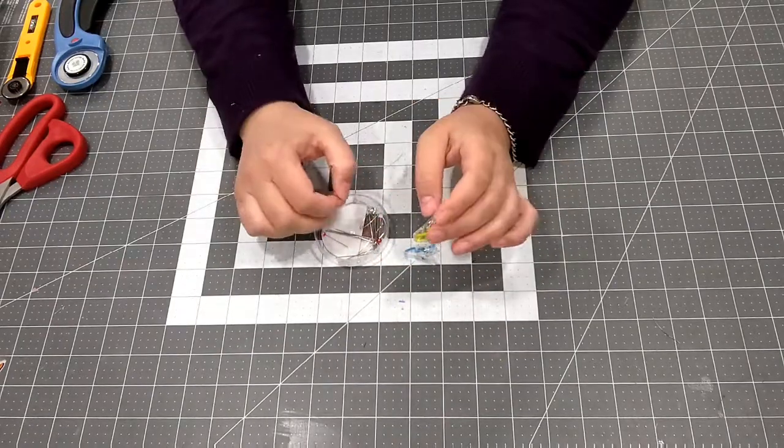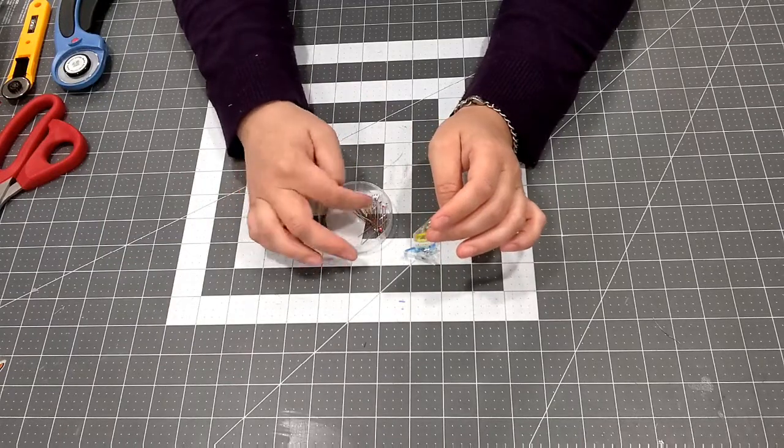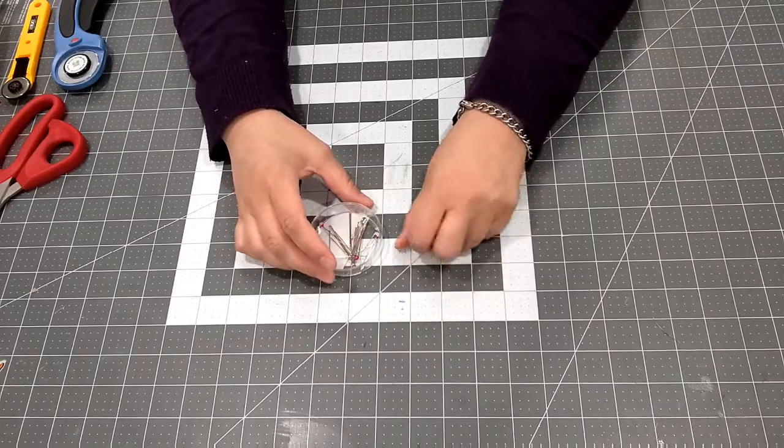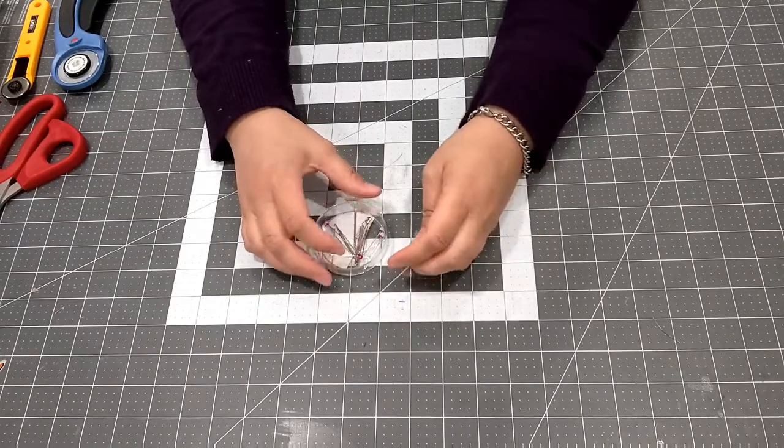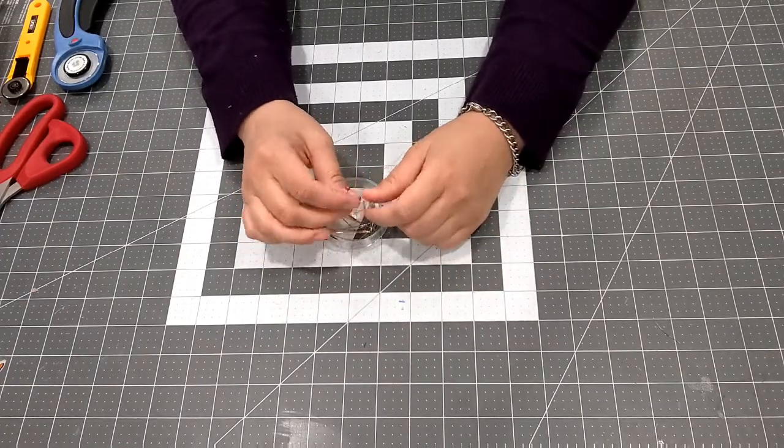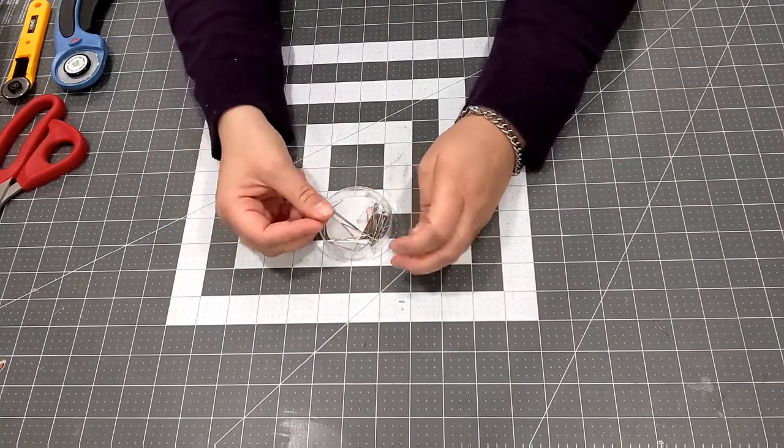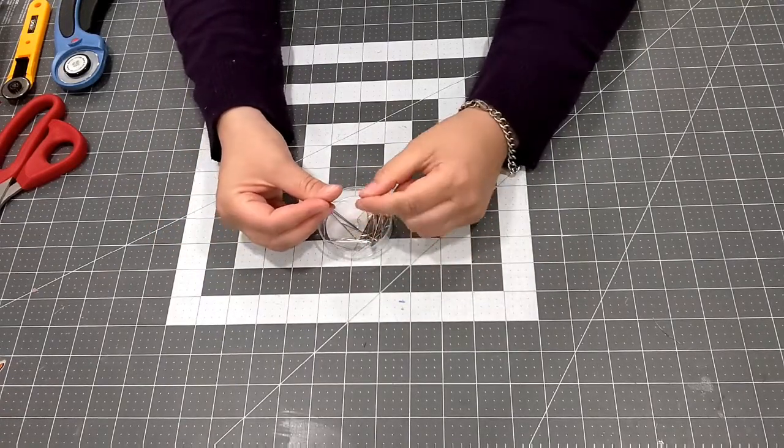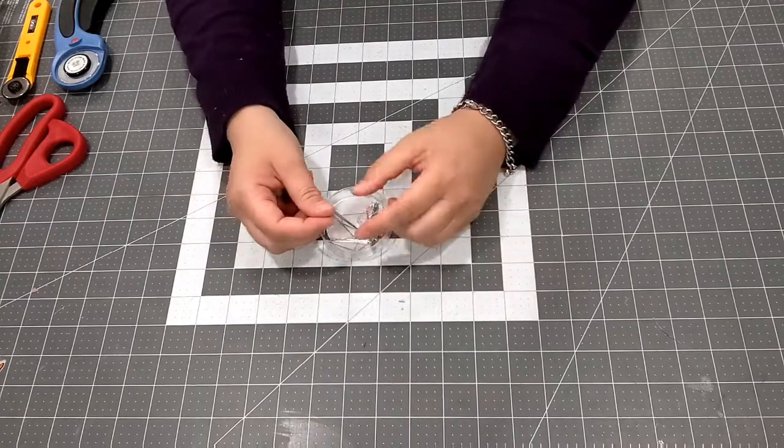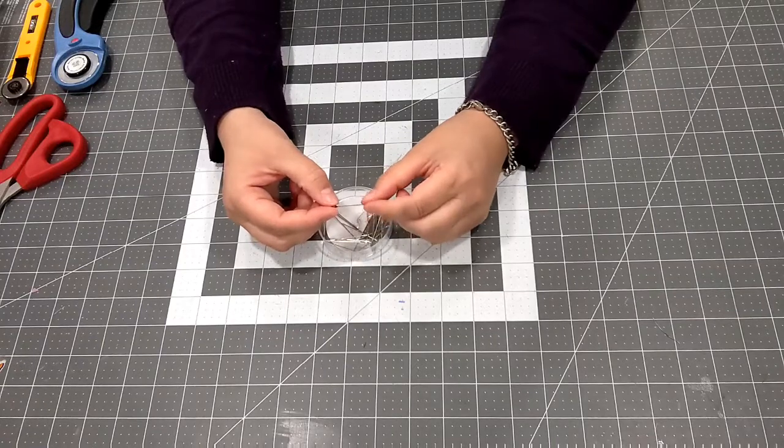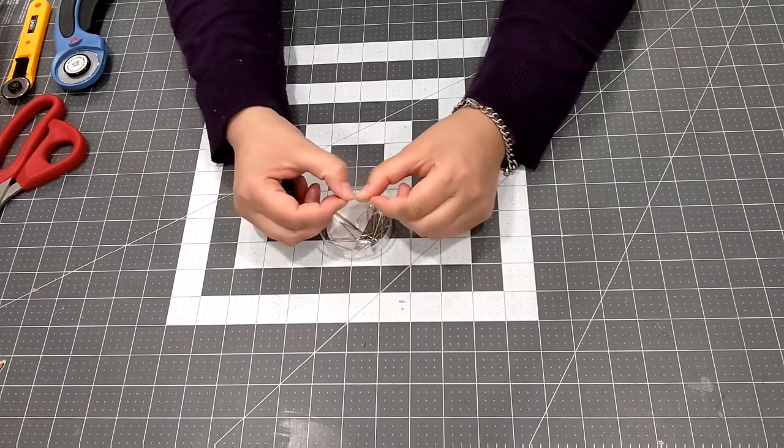But be careful—do not sew over pins. I know lots of people do, but that is such a hazard. You can damage your machine or your eye if a piece of it breaks off and flies into it. So safety tip: don't do it. And safety tip number two: wear safety glasses when you're sewing.